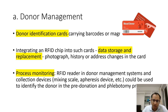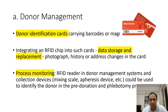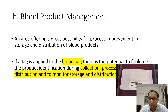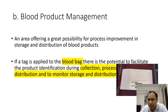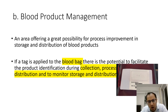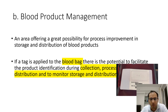For process monitoring, there can be an RFID reader linked to a donor management system and collection devices like mixing scales, apheresis devices, etc. In blood product management, this area offers a great possibility for process improvement. If the tag is applied to the blood bag, it has the potential to facilitate product identification during collection and throughout the lifecycle of the blood bag — from collection, processing, and distribution to monitoring, storage, and delivery to the patient.